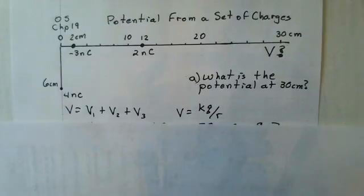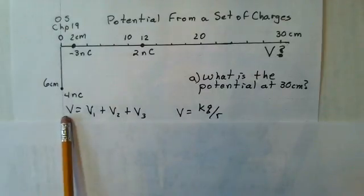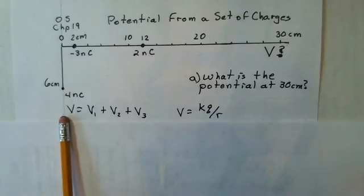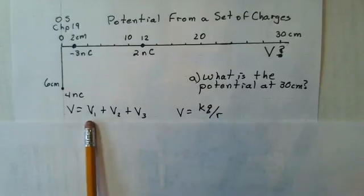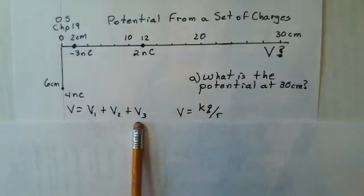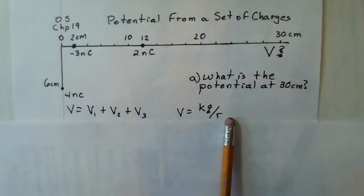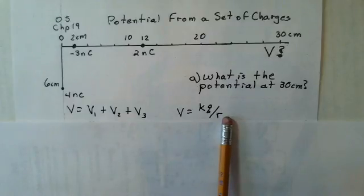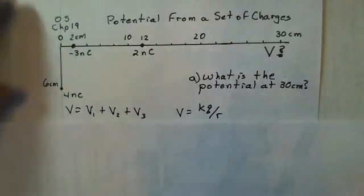We know that we can add up the potentials from single point charges just as scalars. This net potential at the thirty centimeter mark is going to be simply the potential due to charge one plus potential due to charge two plus potential due to charge three. Each potential will be calculated with the constant K, the charge value, and the distance to that charge. That's our setup.